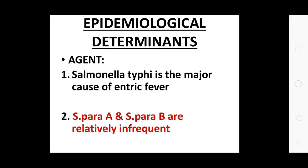S. typhi has three main antigens: O, H, and Vi. S. typhi survives intracellularly in the tissues of various organs.